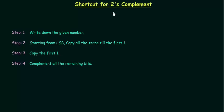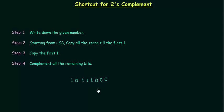In this presentation we will try to obtain 2's complement by a shortcut method. Let's take one binary number whose 2's complement we want to calculate: 1 0 1 1 1 0 0 0. This is the binary number and we want to calculate 2's complement.